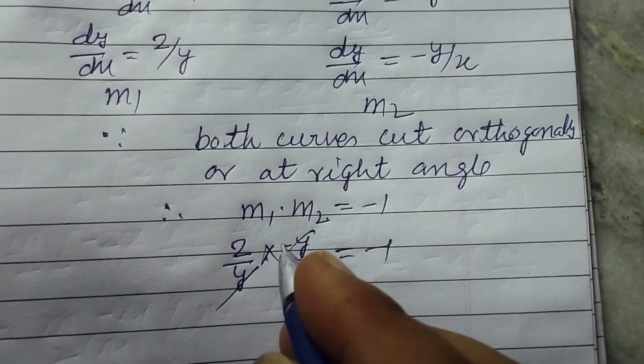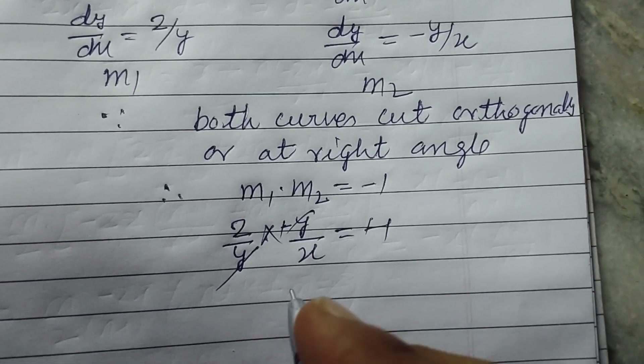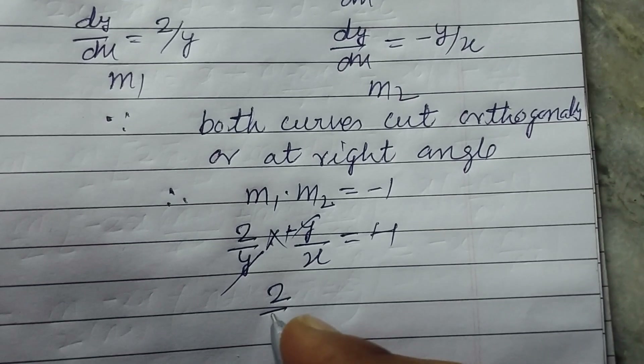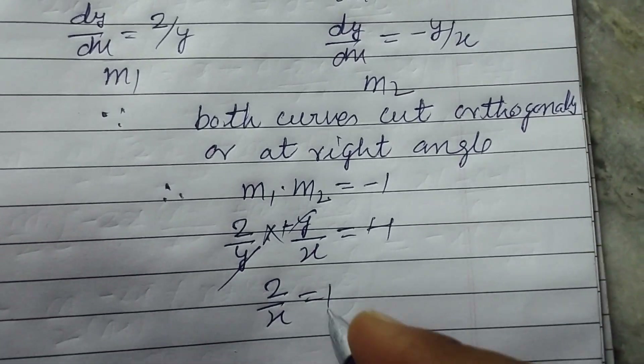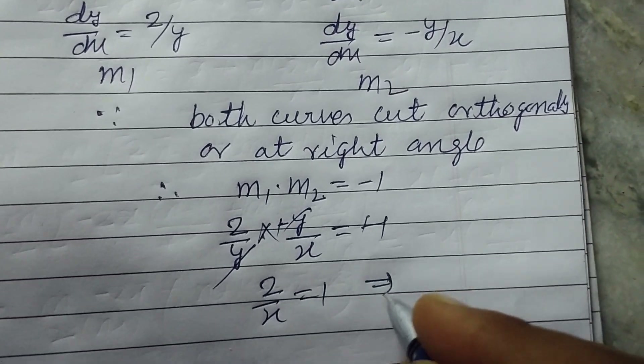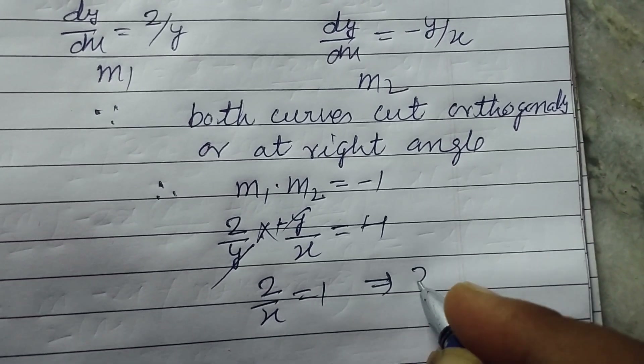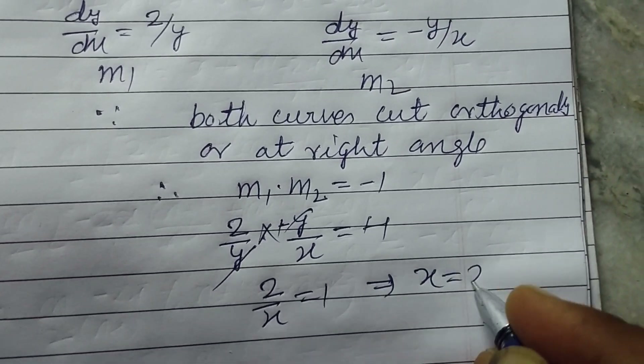So y cancels, and the negatives also cancel. We get 2/x = 1, which means x = 2.